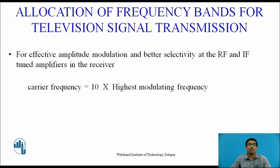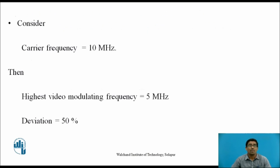For the allocation of frequency bands for television signal transmission, for effective amplitude modulation and better selectivity at RF and IF tuned amplifiers in the receiver, the carrier frequency must equal 10 times the highest modulating frequency. Consider carrier frequency = 10 MHz; then the highest video modulating frequency = 5 MHz, giving a deviation of 50%.